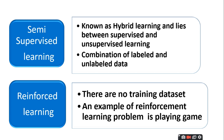Supervised learning uses training to make your model work, while unsupervised learning does not. Semi-supervised learning uses a combination of labeled and unlabeled data, because it is a hybrid type of learning.